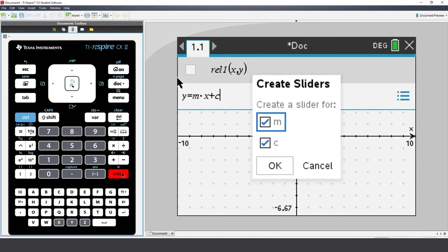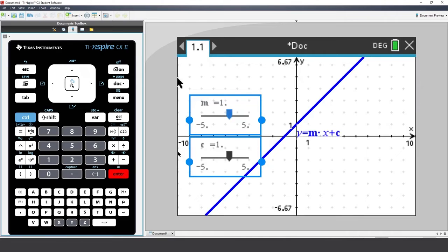TI-Inspire detects the items that are not yet defined, the m and the c, our parameters, and invites us to create sliders. Press Enter to accept the two new sliders.